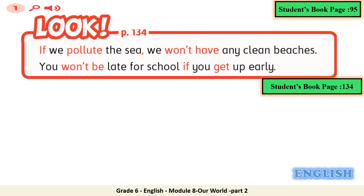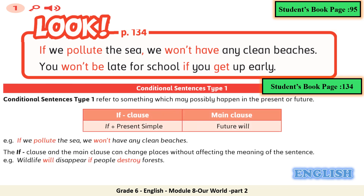Now we can go back to student book page 134. On page 134 we have another explanation for conditional sentences type 1. The If-clause is formed with 'if' plus present simple, and the main clause is future 'will'. Remember, students, the negative form does not affect the tense. So I can have present simple negative and I can have the future simple negative — for example, 'will' becomes 'won't'.